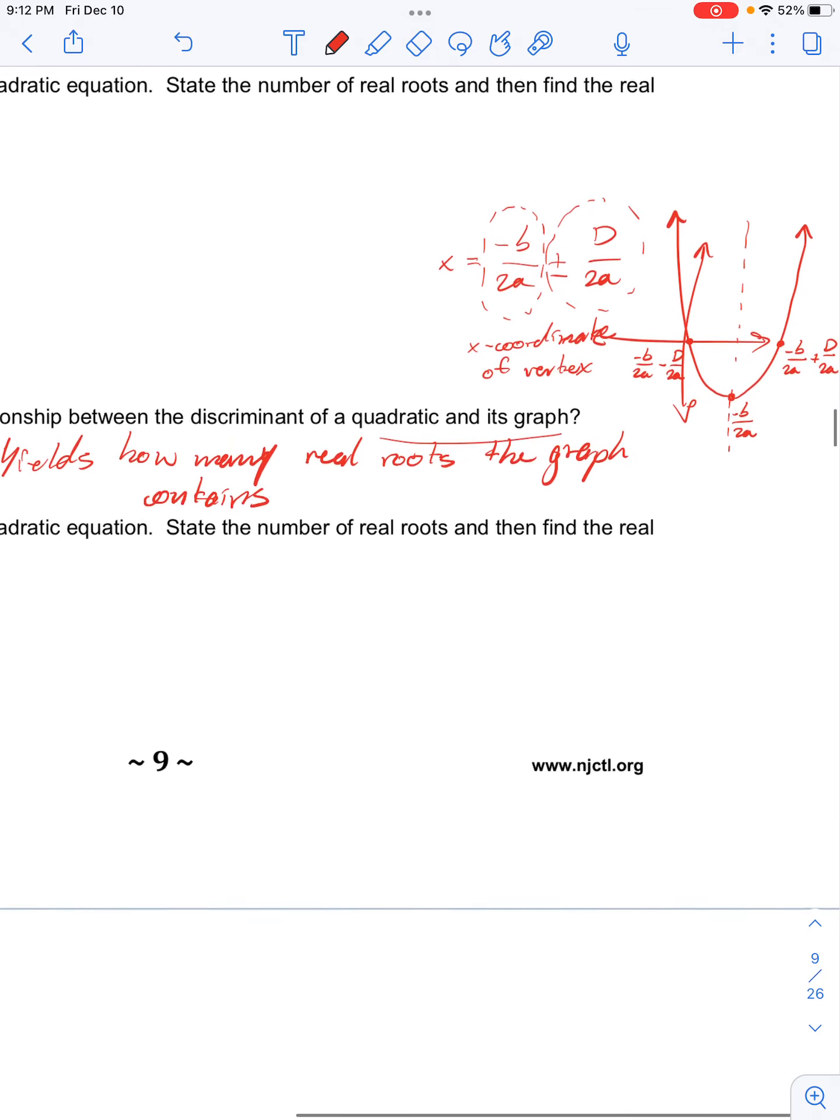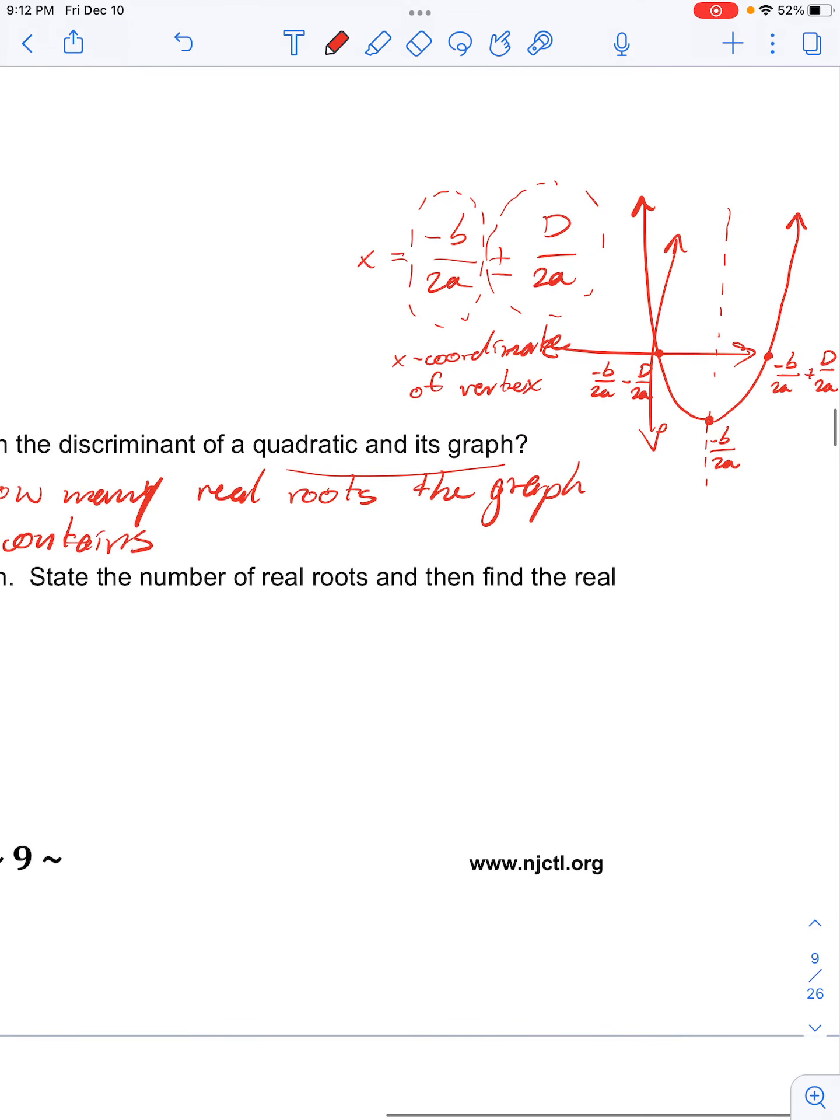Because if the discriminant is equal to 0, then we only have this negative b over 2a term, which means we only have one root.